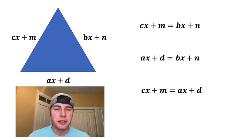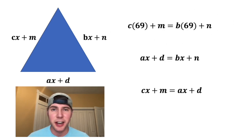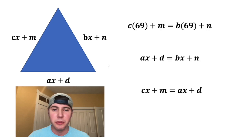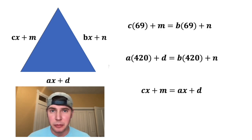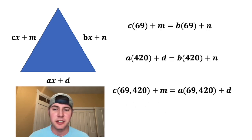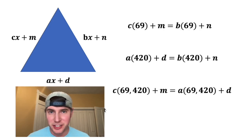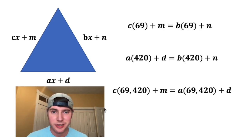Now for this first one, I want the solution to be 69, so I'm going to plug in 69 for x. For this one, I want the solution to be 420, so I'm going to plug in 420 for x. And for this one, I want the solution to be 69,420, so I'm going to plug in 69,420 for x.